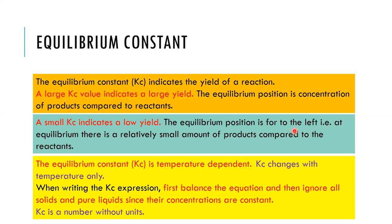So if Kc is less than 1, the yield is low — the amount of products is low. The equilibrium constant is temperature-dependent. Kc only changes with temperature. If you change pressure or concentration, the Kc value does not change. When writing the Kc expression, first balance the equation because the coefficients — the numbers in front of each formula — are very important to writing the formula correctly.